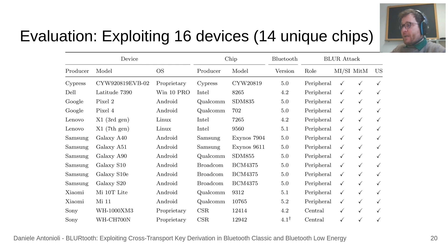We successfully evaluated the BLUR attacks on 16 different devices employing 14 unique Bluetooth chips. As we can see from the table, the attacks are effective regardless of the device, software, and other details. The list of affected manufacturers includes Cypress, Dell, Google, Lenovo, Samsung, Xiaomi, Sony, Intel, Qualcomm, Cambridge Silicon Radio, and Broadcom. Moreover, the attacks are effective on all Bluetooth versions compatible with CTKD in the market: Bluetooth 4.2, 5.0, 5.1, and 5.2.